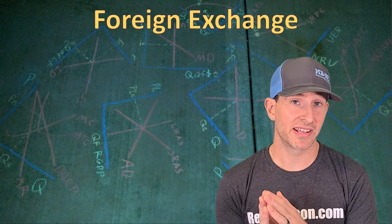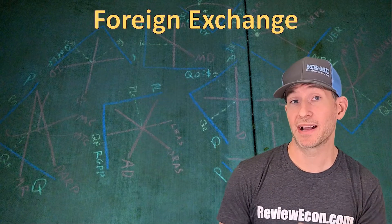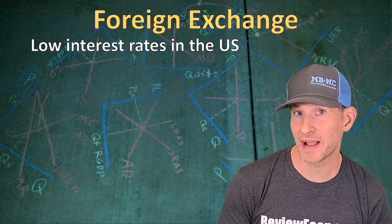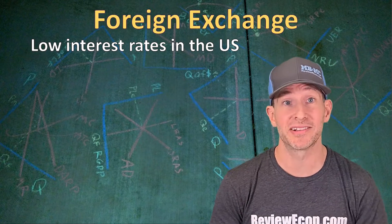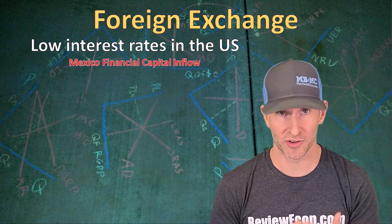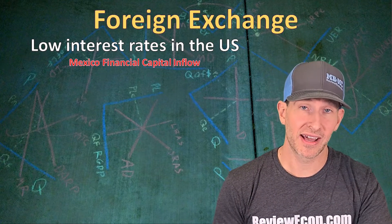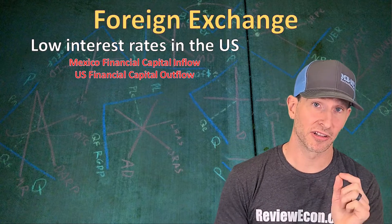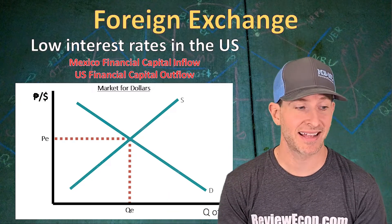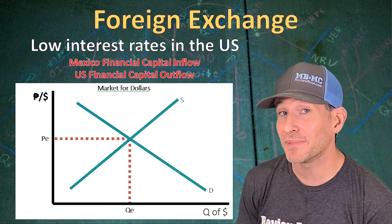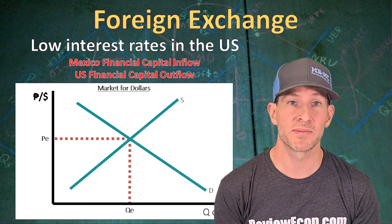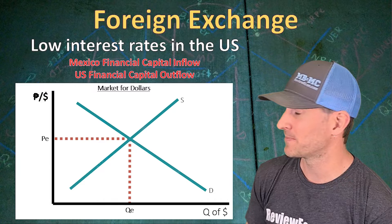Now we're going to see how changes in the interest rate from the Federal Reserve's actions impact the exchange rate for the US dollar and the Mexican peso. If we see low interest rates in the United States — perhaps caused by expansionary monetary policy increasing the money supply and driving down the interest rate — Mexico will see a financial capital inflow as foreign investors seek higher or unchanged interest rates in Mexico. Here we see a market for US dollars, with quantity of US dollars on the X-axis and the price of US dollars in Mexican pesos on the Y-axis, showing a downward-sloping demand curve, upward-sloping supply curve, and equilibrium exchange rate labeled PE.